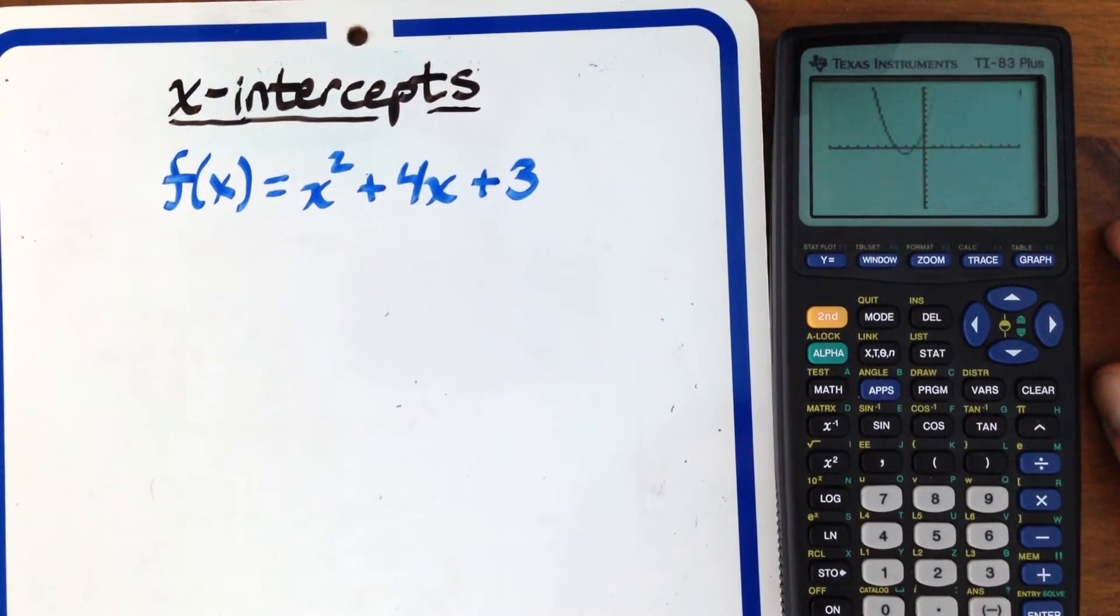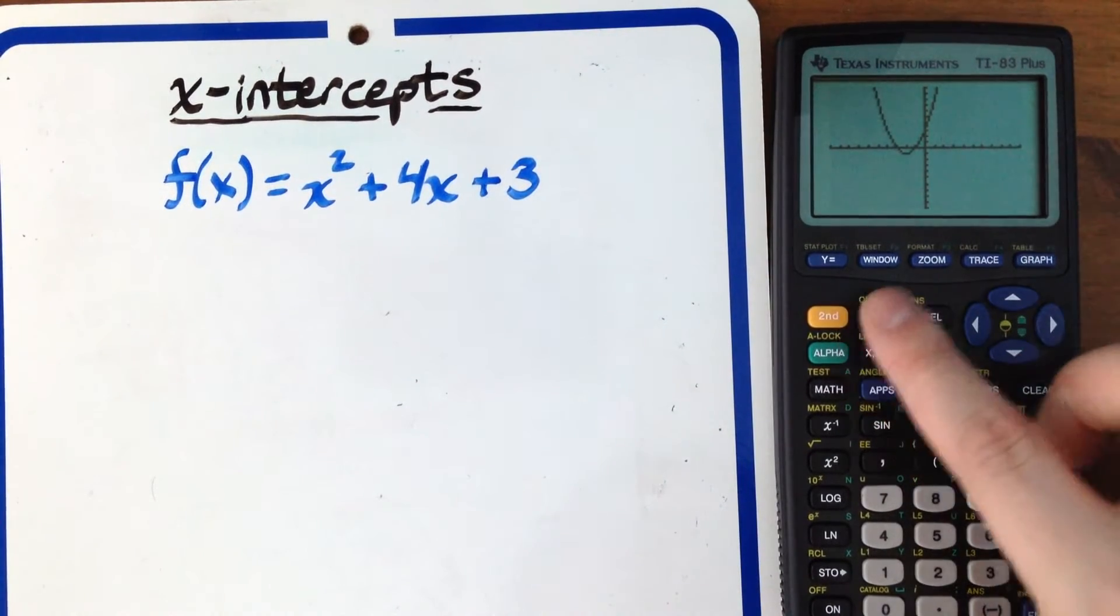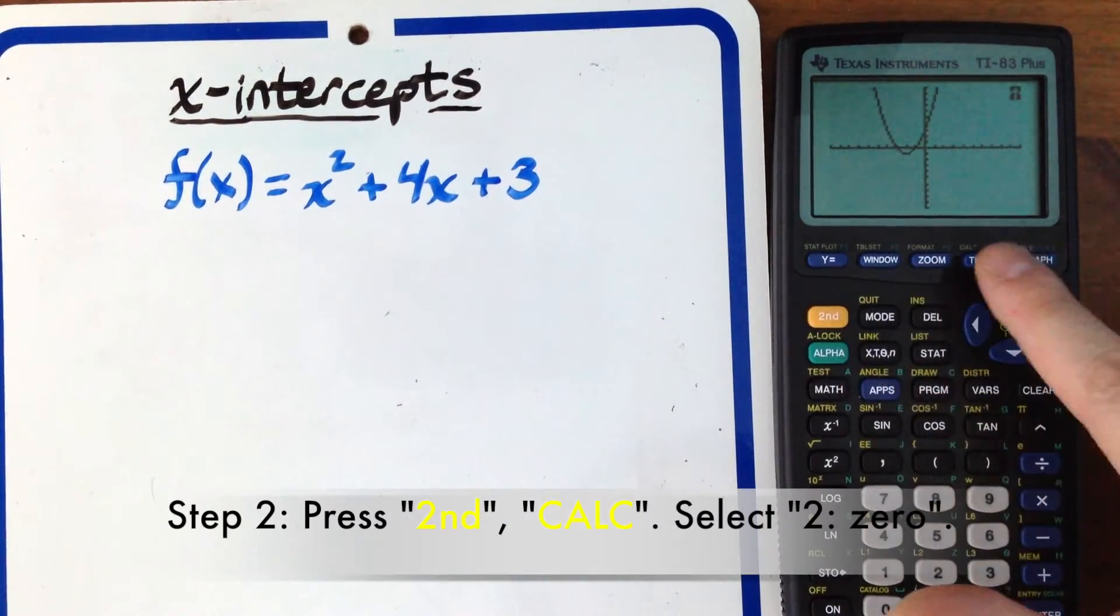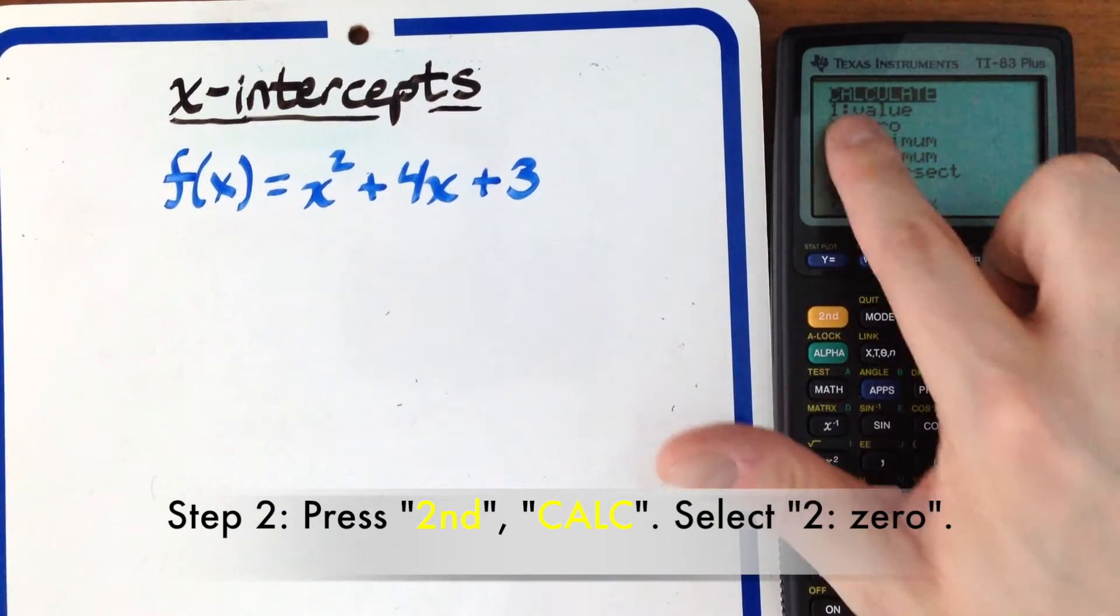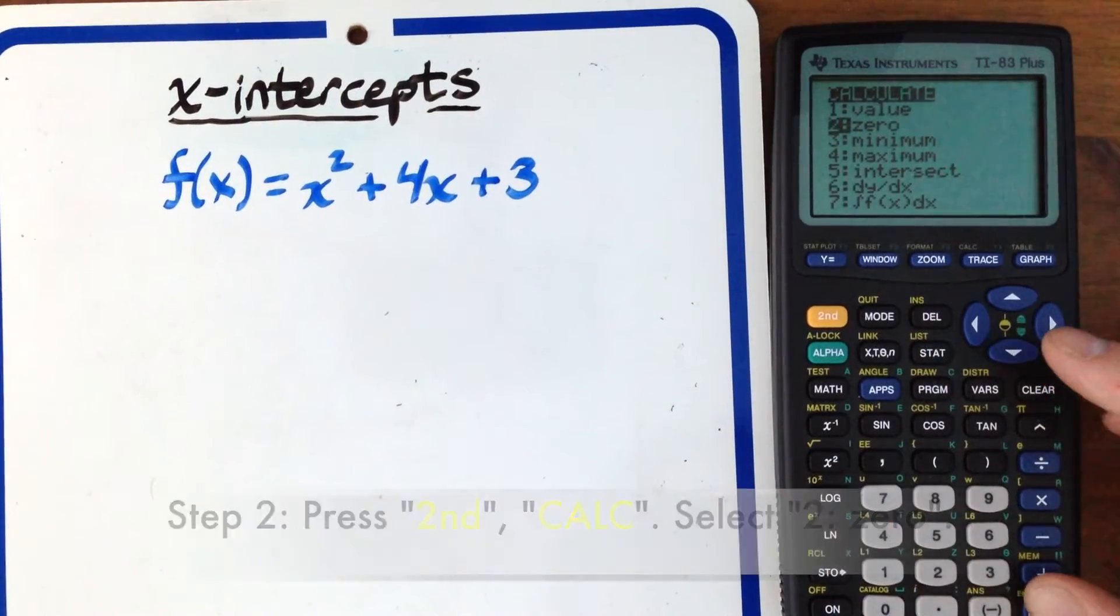Then hit Graph. It will graph the function. Next, press 2nd Calc, scroll down to where it says zero, and hit Enter.